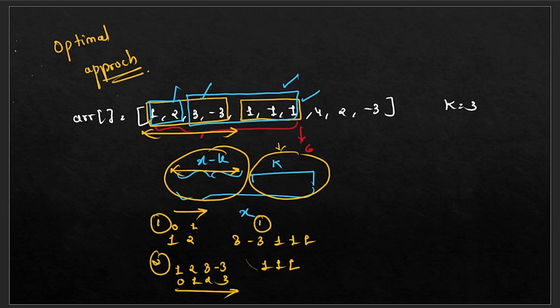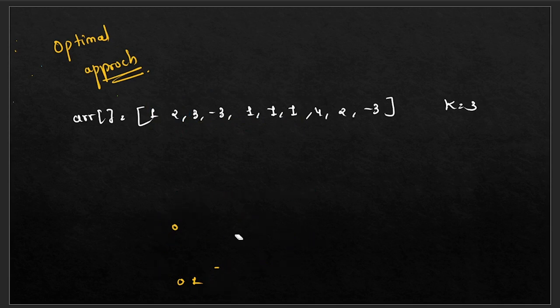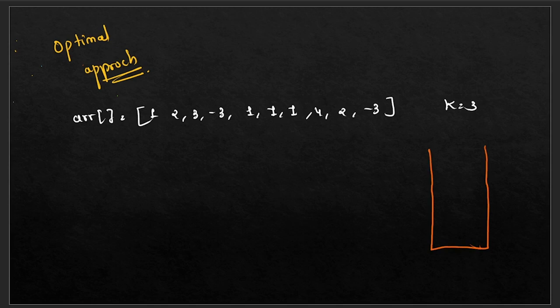To efficiently check how many times a prefix sum value has occurred, we use a hash map. The hash map stores presum as the key and count as the value. We also define variables: presum = 0, count = 0. Initially we insert {0: 1} into the map, because before processing any element, the prefix sum is 0 and it has occurred once.